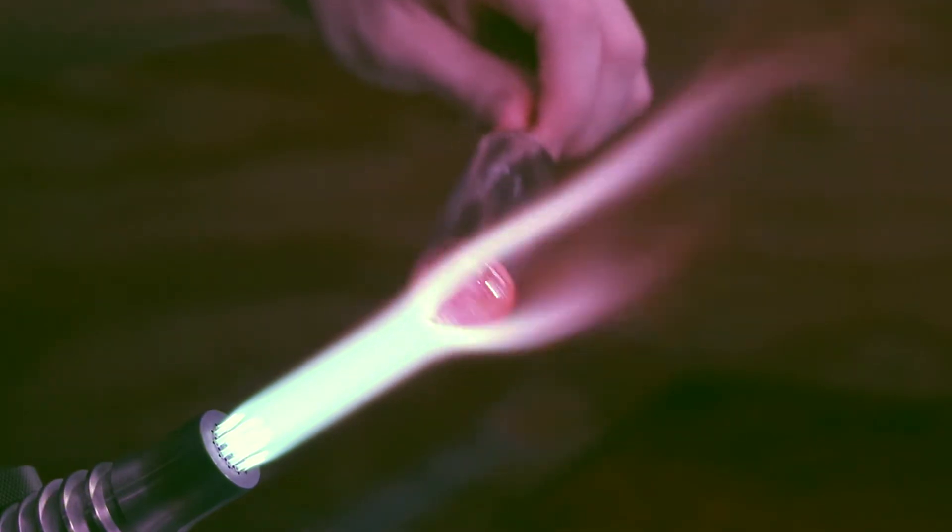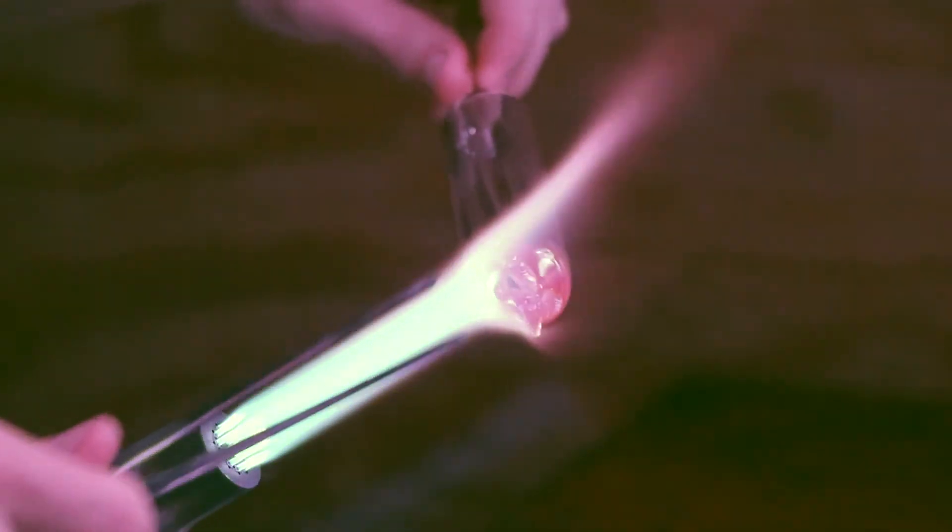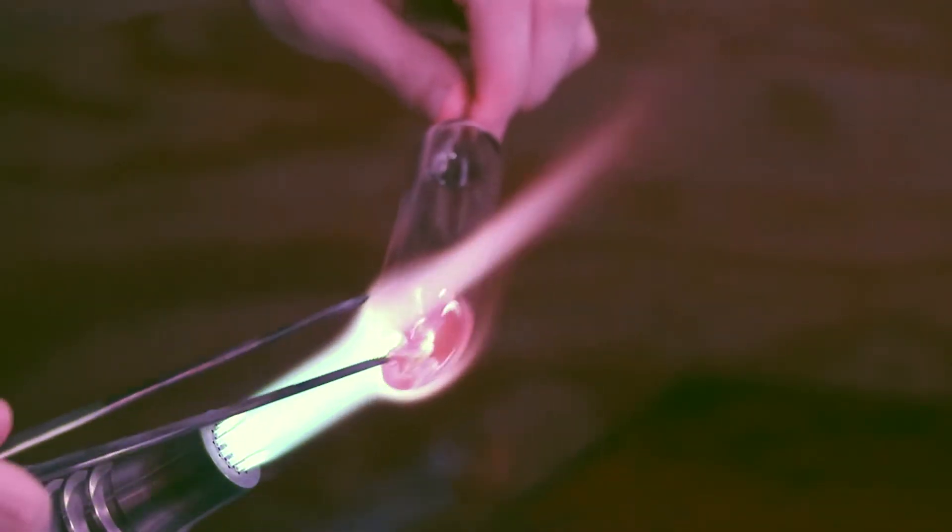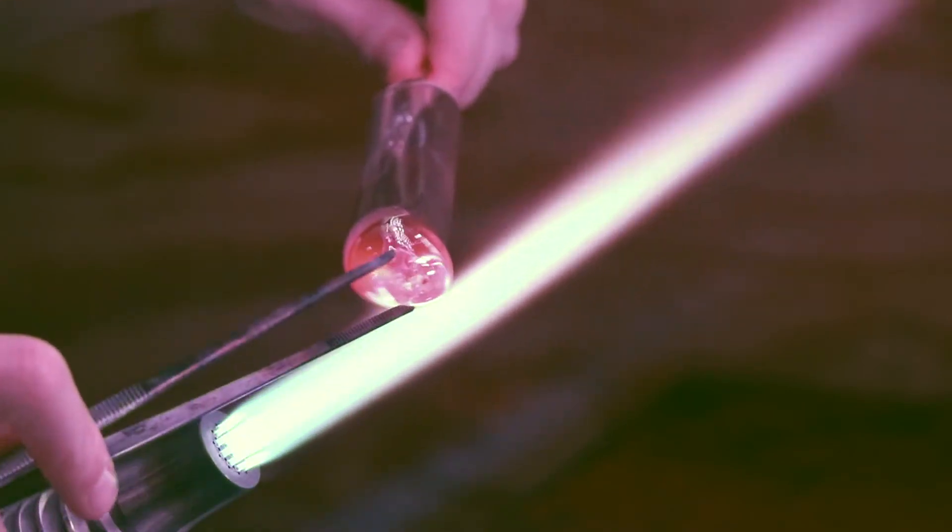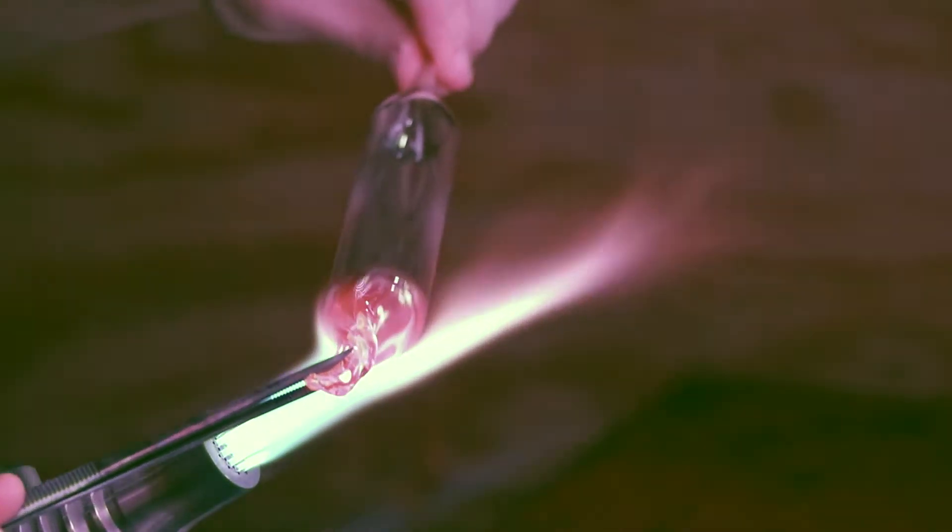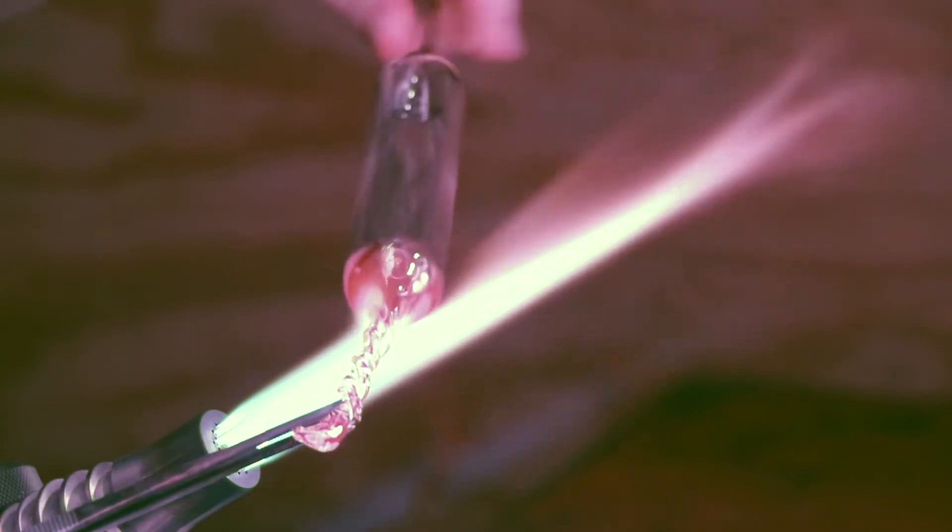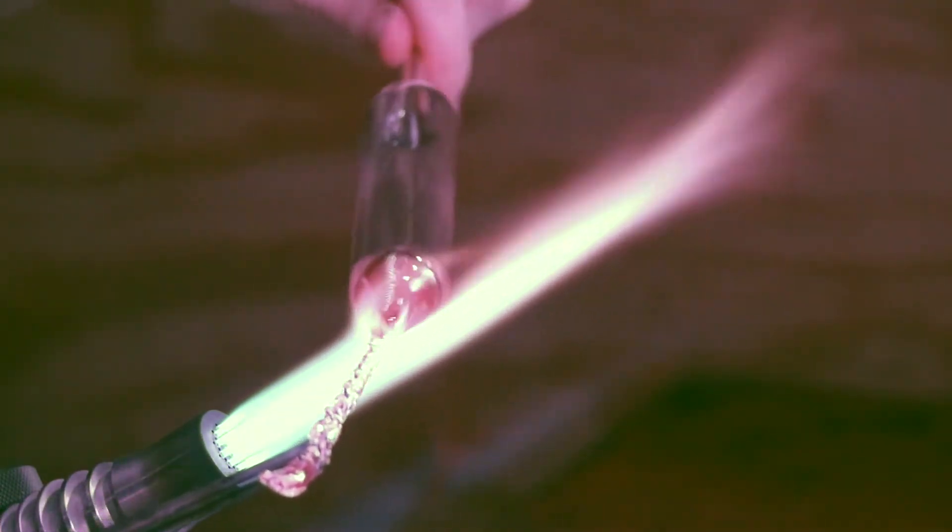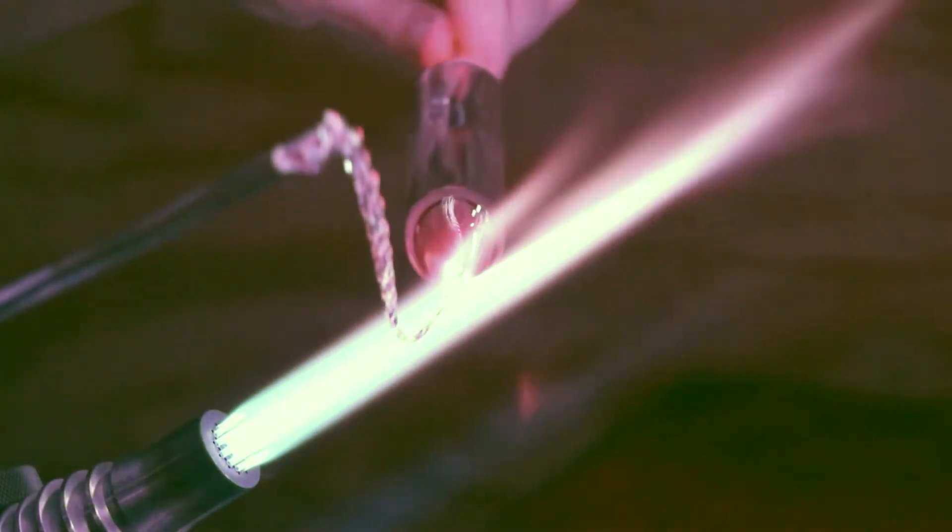I'll grab the tweezers and pull out some of the excess glass at the end and close it up at the same time. Doing this very slowly and consistently will pull those walls out all to the same thickness with a little bit of a nub at the end.